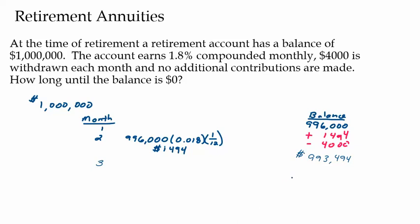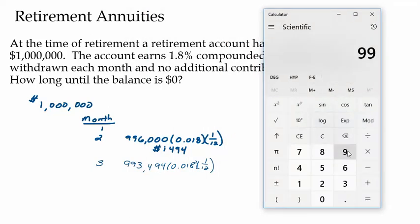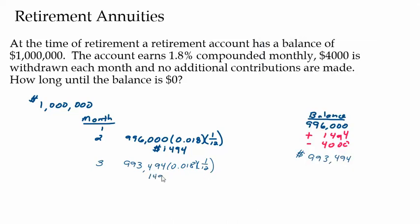We're going to spend our $4,000 on our expenses. And while that's happening, our lump sum that we have left is going to be earning interest. 993,494 times 0.018 divided by 12 gives me $1,490.24. You can see what's happening here. Since my balance is reducing, my amount of interest is reducing. Last month I got $1,494, this month I got $1,490. Still a lot of money, but the amount of interest is going to decrease each month because your balance is decreasing each month.